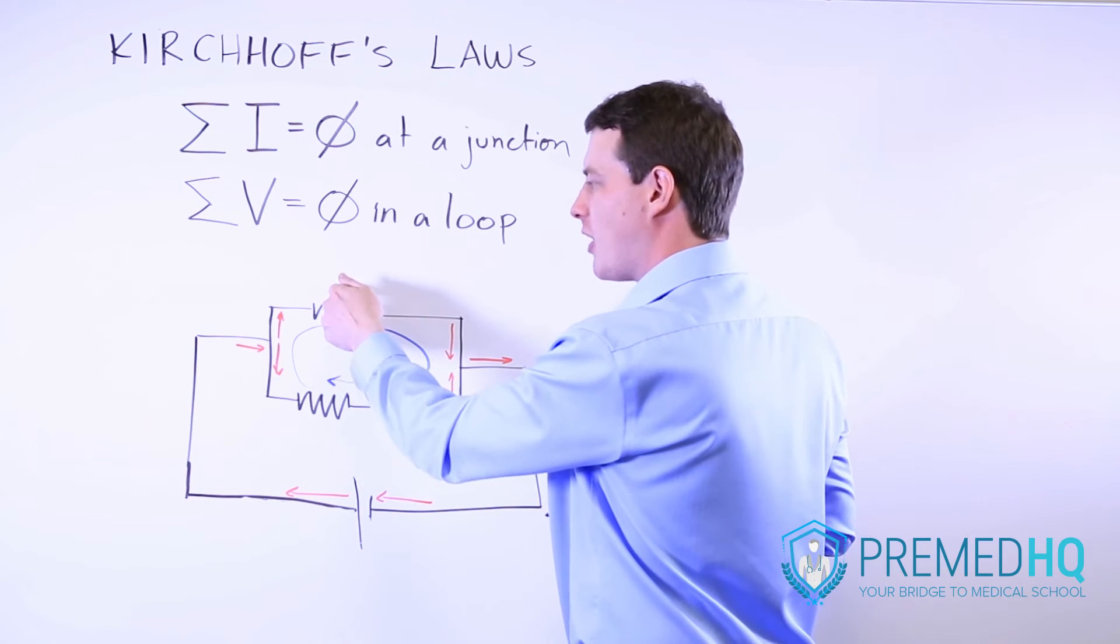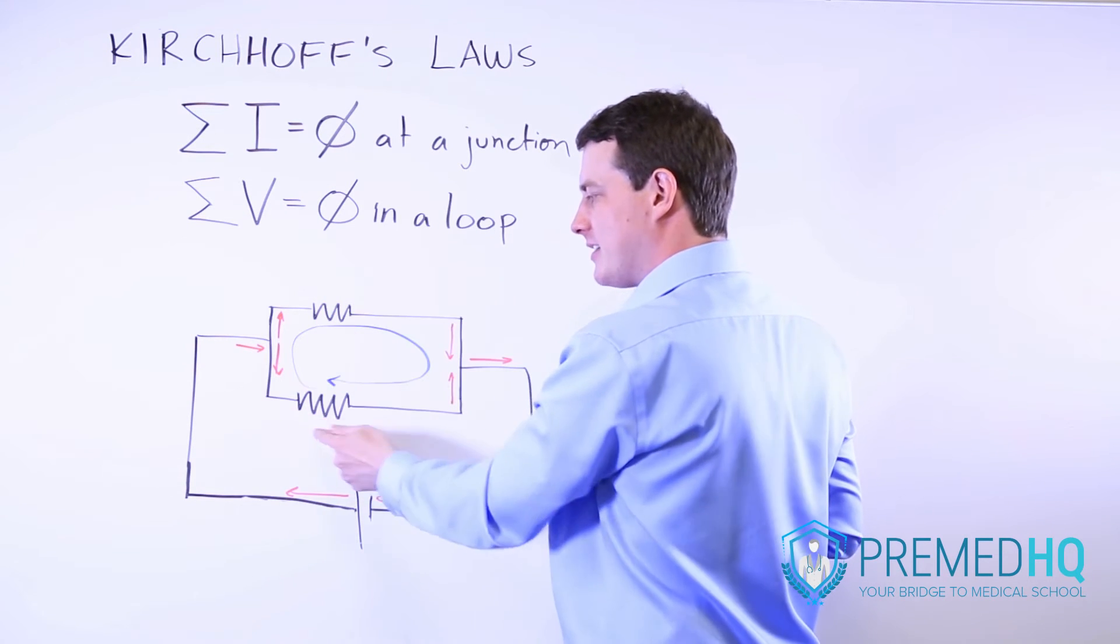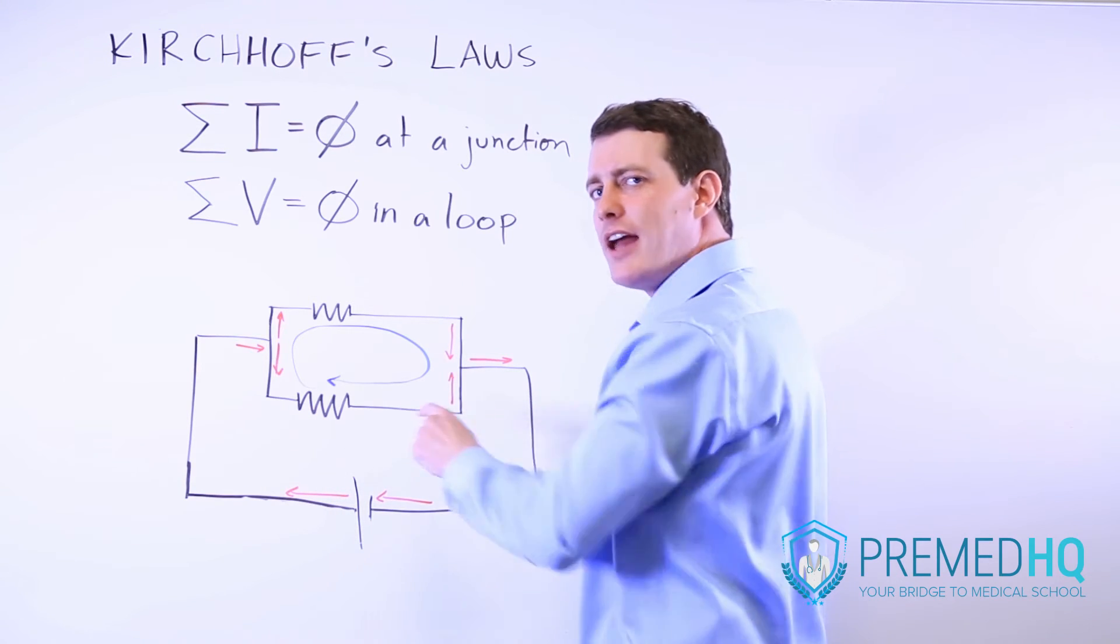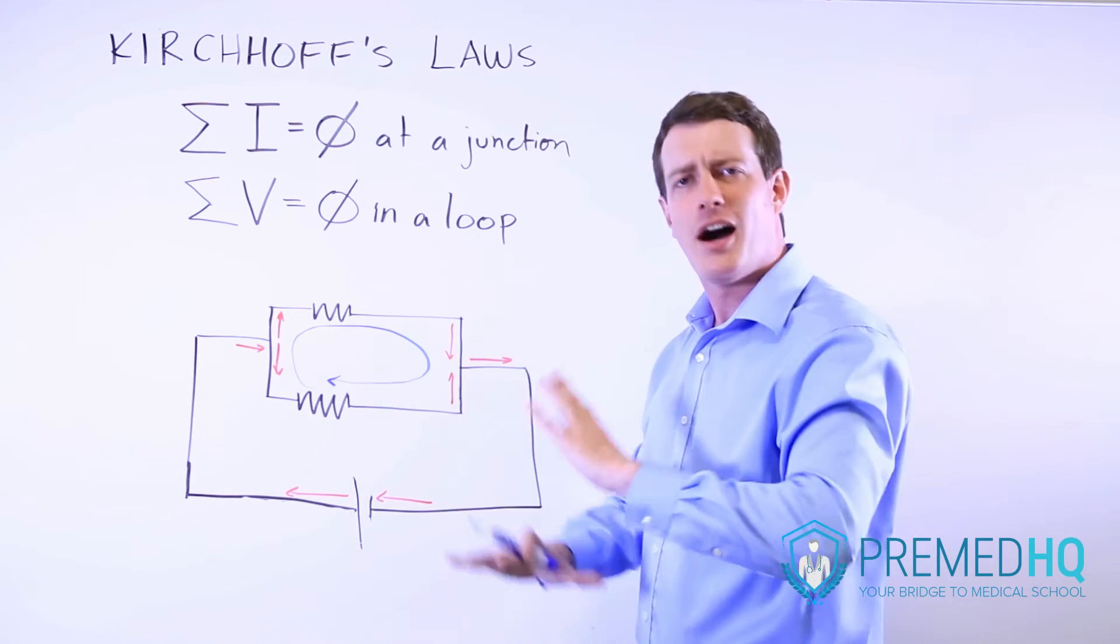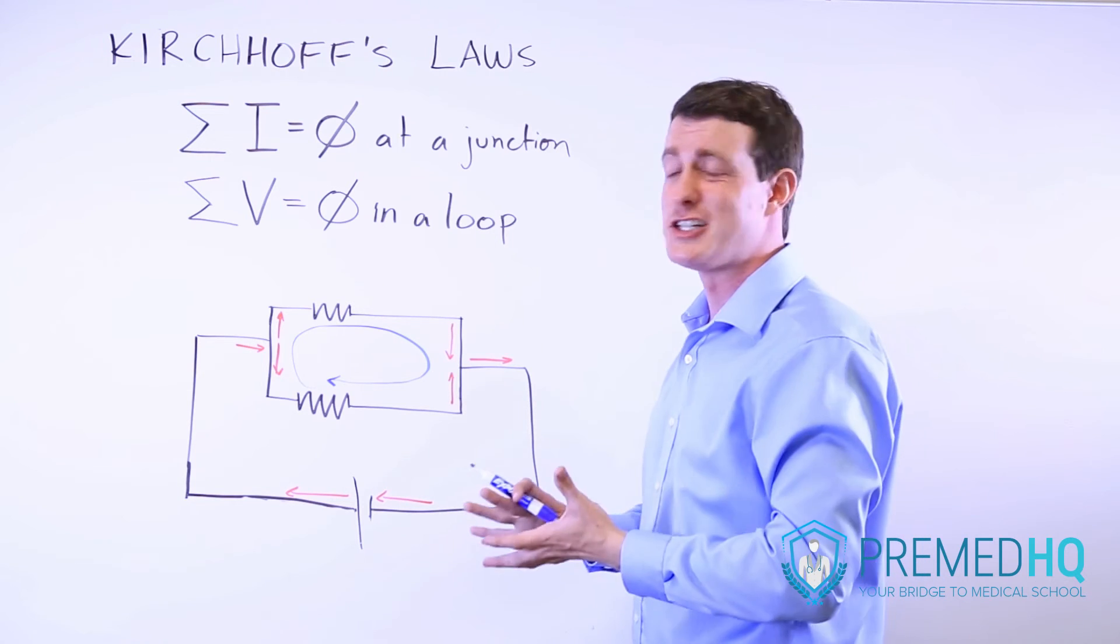And so whatever voltage drop occurs here is exactly opposed by the voltage drop here. And so if you're ever in doubt about how the current is going to split entering a junction...